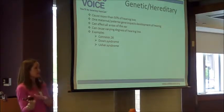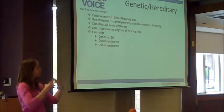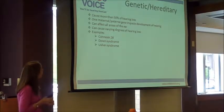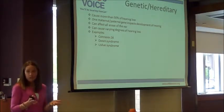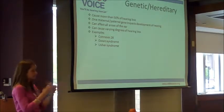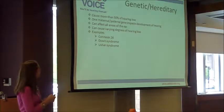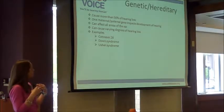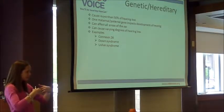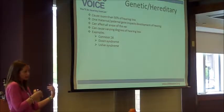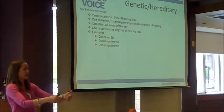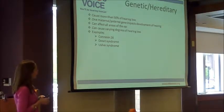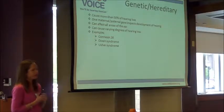It could be something that happens on the mother's side, the father's side, or both combined. Genetic hearing loss can affect all aspects of the ear — the outer ear, the middle ear, or the inner ear — and it can cause varying degrees of hearing loss, from mild to profound, where they don't hear anything. One example of genetic hearing loss is Connexin-26, which is a gene mutation. If both parents have that mutation, the child will have a hearing loss. If just one parent has it, the child could have a hearing loss but could definitely pass it on to their offspring. At Child's Voice, a lot of our children have the Connexin-26 mutation as the cause of hearing loss.